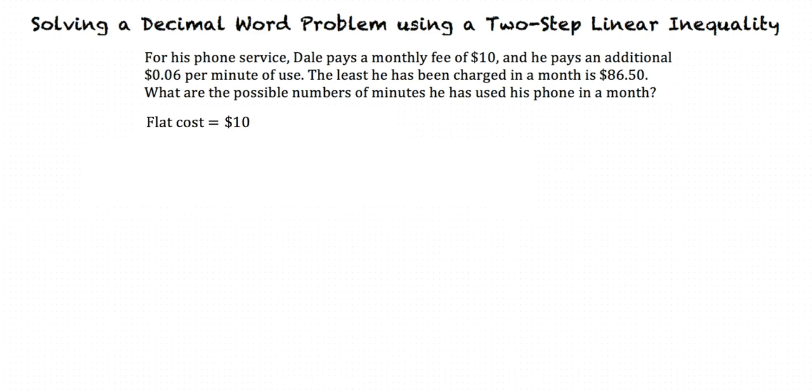We have a flat rate of $10, and second, for each minute we use, our bill increases by $0.06. Our cost for all of the minutes used should be the amount of minutes used multiplied by the price per minute. So if we use the variable m to represent the number of minutes used, our cost for the minutes used should be $0.06 times m.